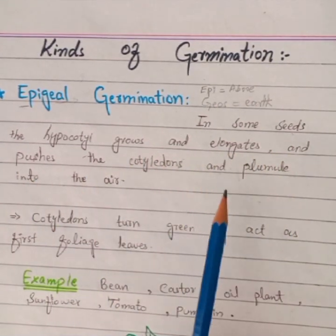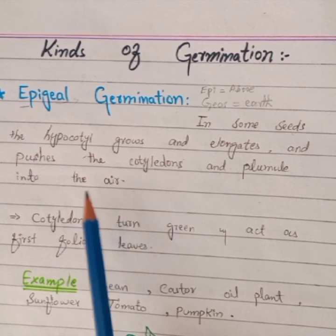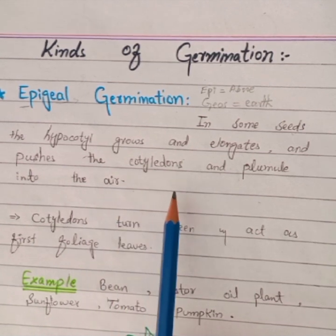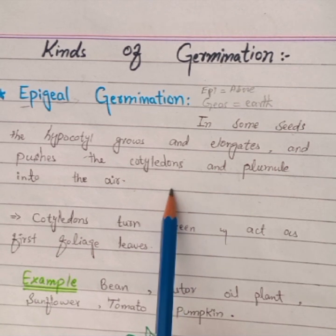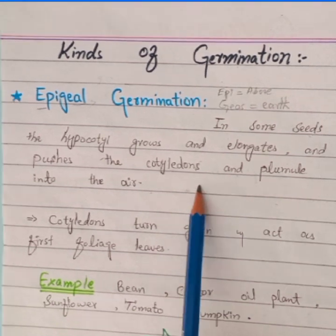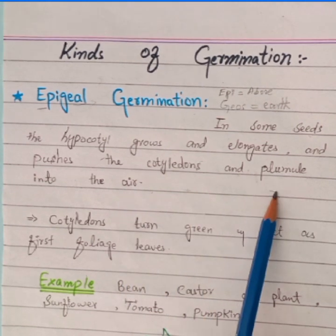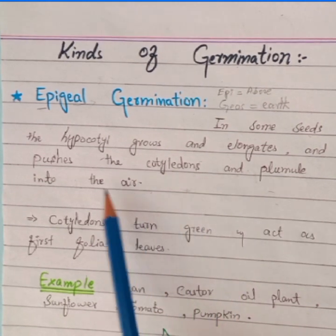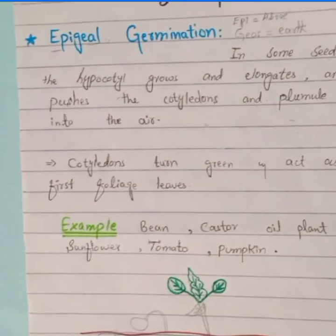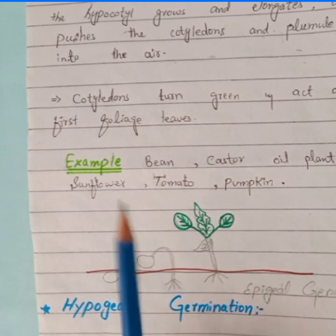In epigeal germination, the hypocotyl grows and pushes the cotyledon into the air — meaning the cotyledon is not embedded in the soil. Such a condition, in which the cotyledon along with the plumule is carried into the air, is known as epigeal germination. Here the cotyledons turn green and become the first foliage leaves.